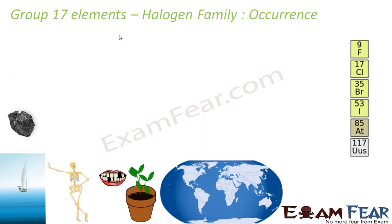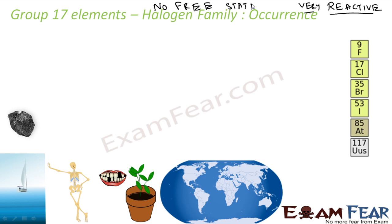Now let's talk about the occurrence of Group 17 elements. Since they are very reactive, they do not occur in the free state. They occur in the combined state only, combined with other elements.